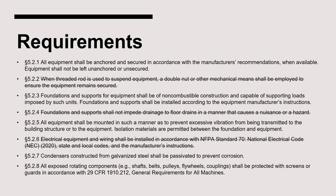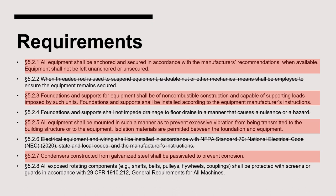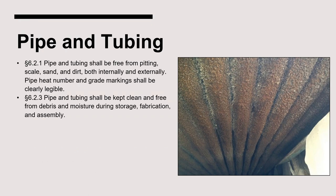The requirements on this page are applicable to all ammonia refrigeration equipment, though select items do not pertain to condensers. Here is a quick rundown: all equipment must be anchored and secured. Foundations and supports must be non-combustible and designed for the load they will carry. Equipment must be mounted to prevent excess vibration. Condensers must be passivated to prevent corrosion. Exposed rotating components must be protected. Pipe and tubing requirements for condensers include keeping the pipe and tubing free from pitting, scale, sand, and dirt, and shall be kept clean during storage, fabrication, and assembly.